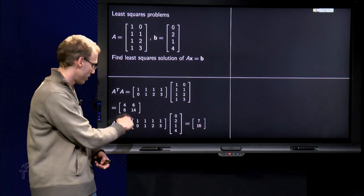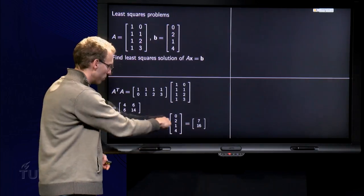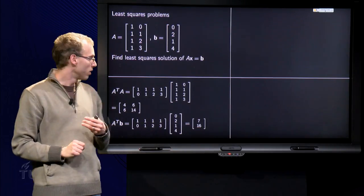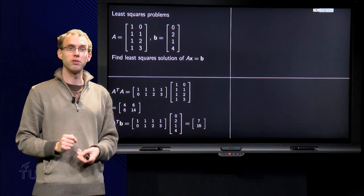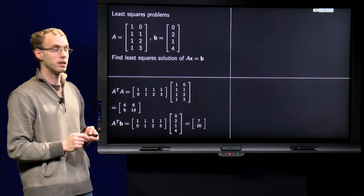The second term: 0 plus 2 plus 2 plus 12 equals 16. So there we have A transpose times A and A transpose times b.